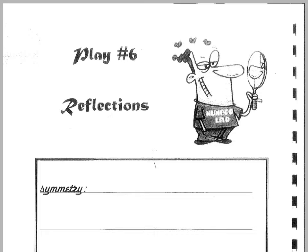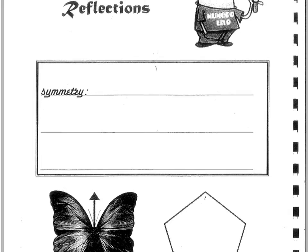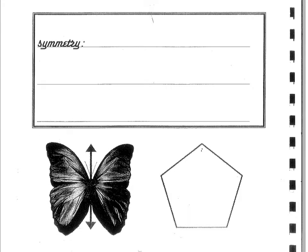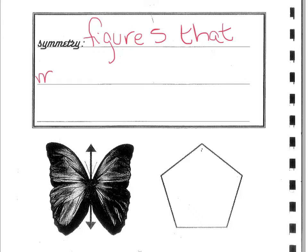In order to understand reflections, we need to understand what symmetry means. Hopefully in your investigation step you kind of figured out a little bit about symmetry. But what symmetry is, is when things look exactly the same when you fold them in half. So when I talk symmetry, I'm saying figures that match exactly when they are folded in half.